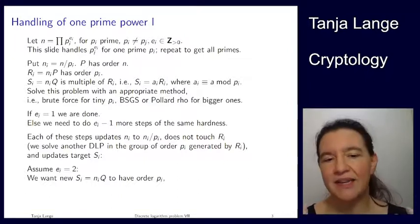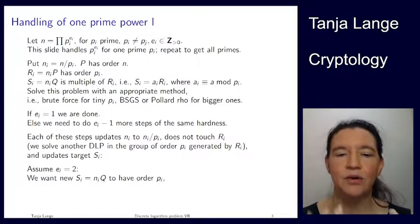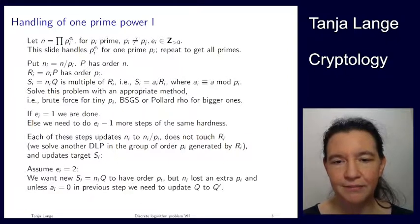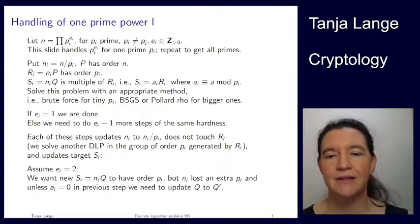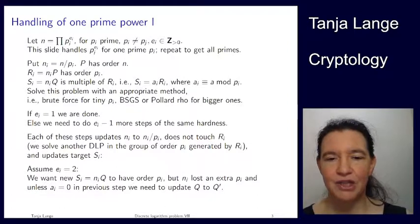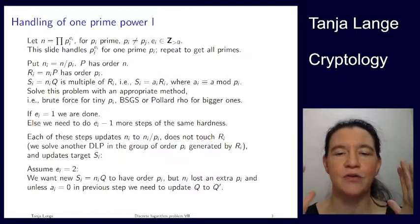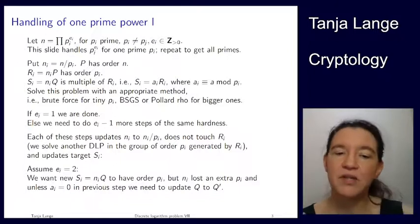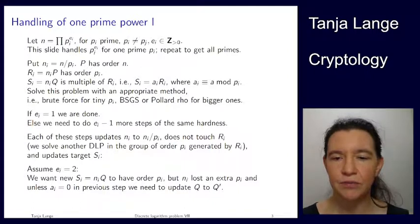So we want to have, again, a situation that our si given us. The new ni has order pi on. More precisely, it's an element in the group generated by ri. But the ni is now a factor pi divided by it. So this will not actually be in the right group order. This will be something in the group of order pi squared, not pi. Unless, of course, the previous ai was 0. So in that case it's not 0. We need to update Q to Q prime.